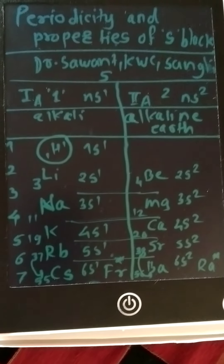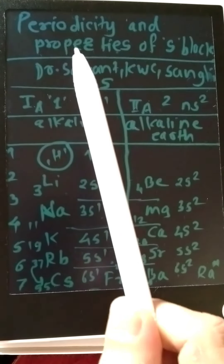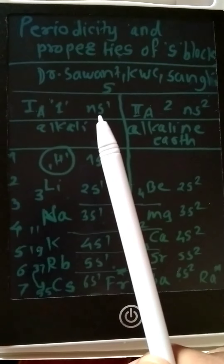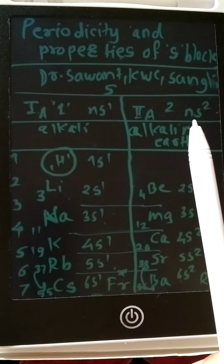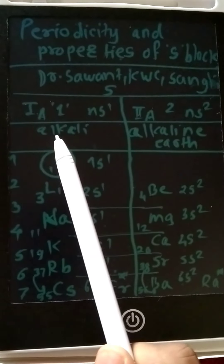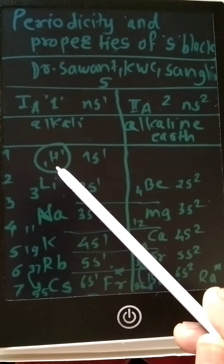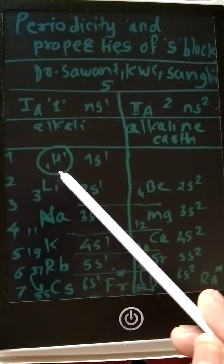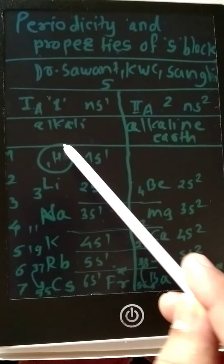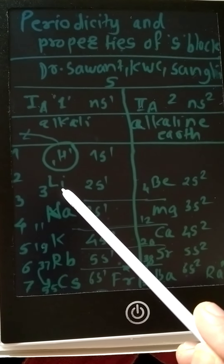S block also contains some radioactive elements like francium from Group 1 and radium from Group 2. The first group has the general configuration ns1 and the second group has general configuration ns2. First group elements are alkali metals and second group elements are alkaline earth metals. Hydrogen is present in the first period but is kept apart in the modern periodic table because it is a gaseous element.